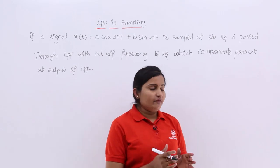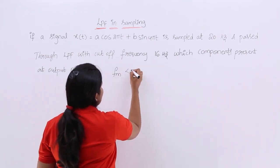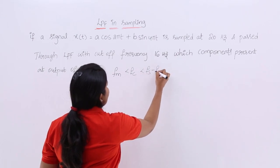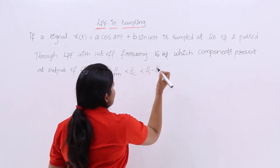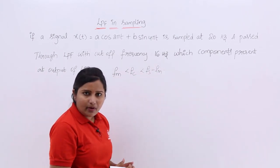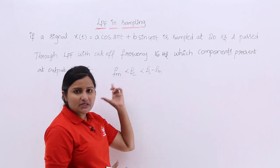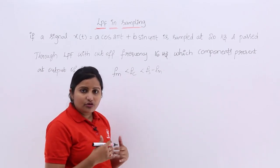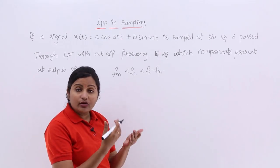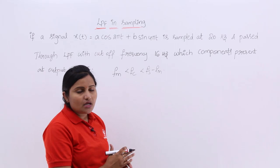That cutoff frequency must satisfy FM < FC < FS minus FM. I already discussed this with you. When any sampled signal passes through LPF, the cutoff frequency of the filter must be like this. Otherwise, you are going to cut your frequency components and you are going to get some noise because of this filter.